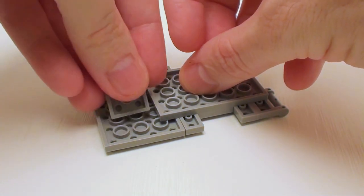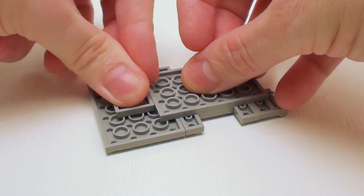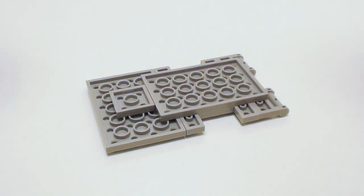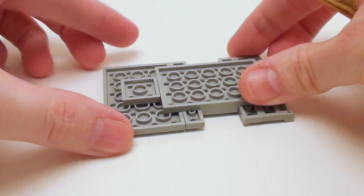I want to place a 2 by 2 plate right next to the 4 by 6 plate, right in the center of the other 4 by 6 plate. Let's flip the assembly over again.